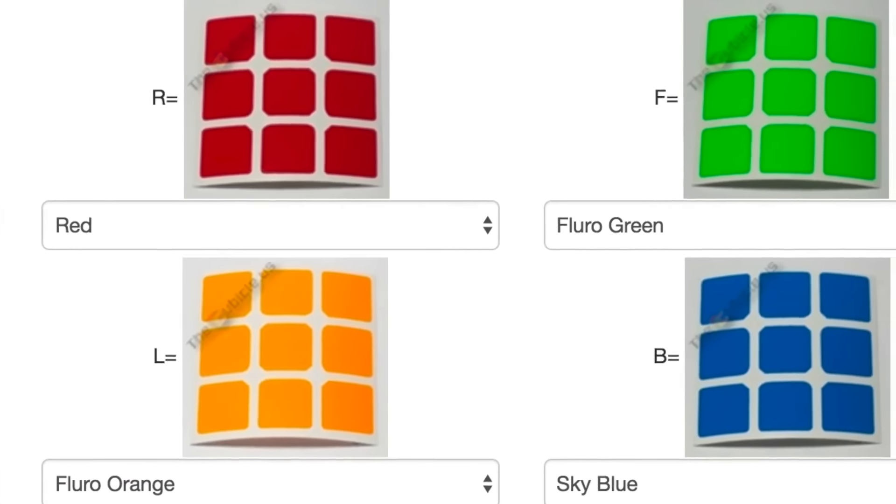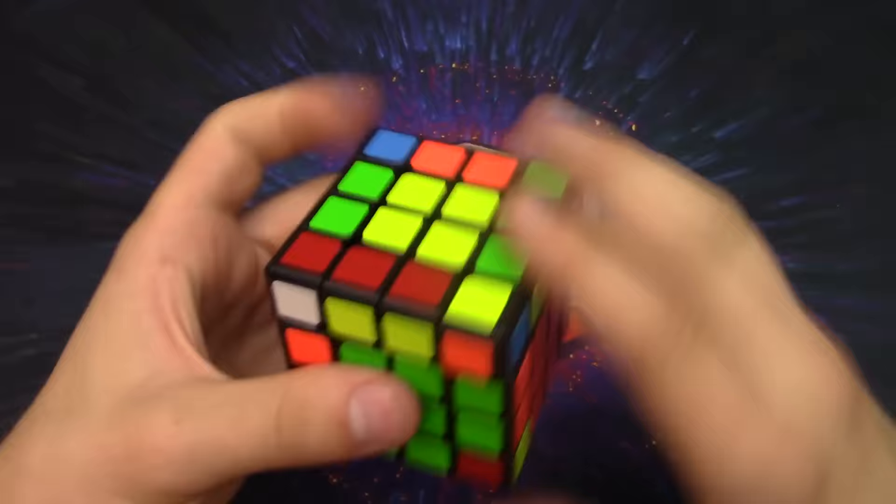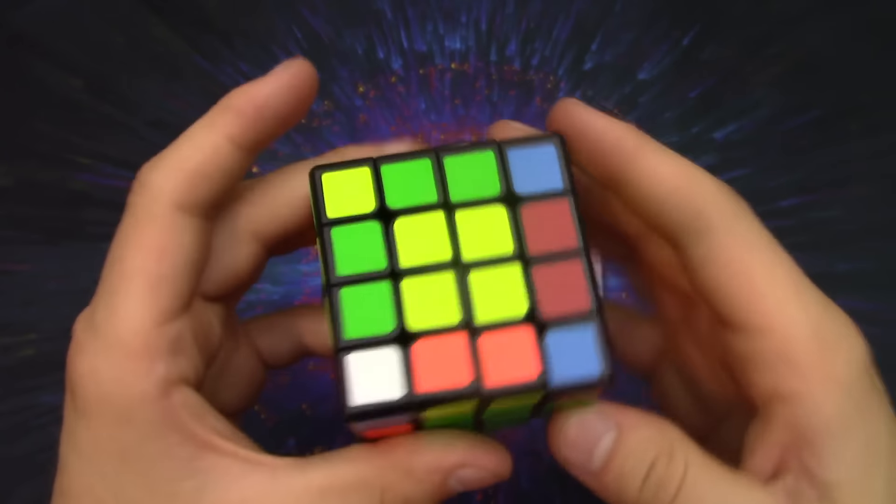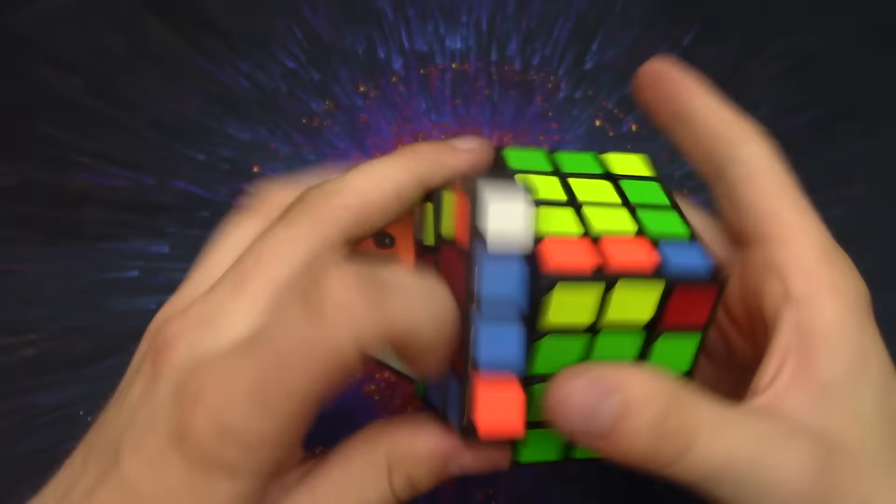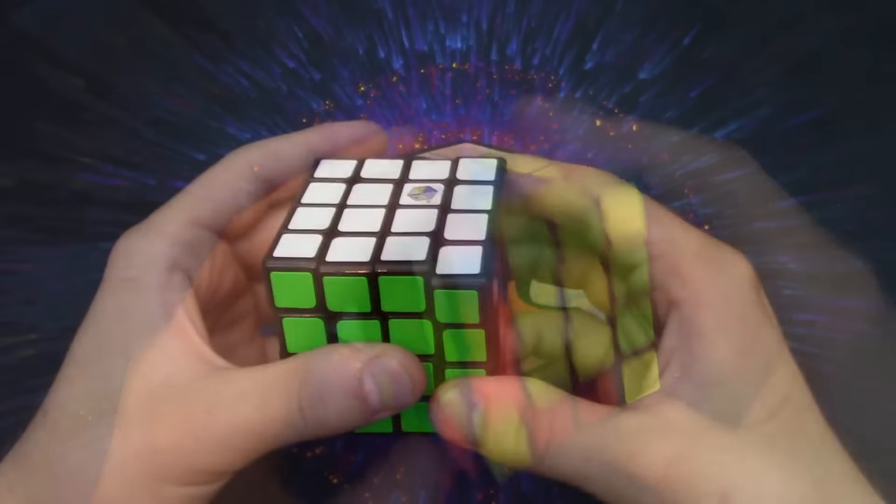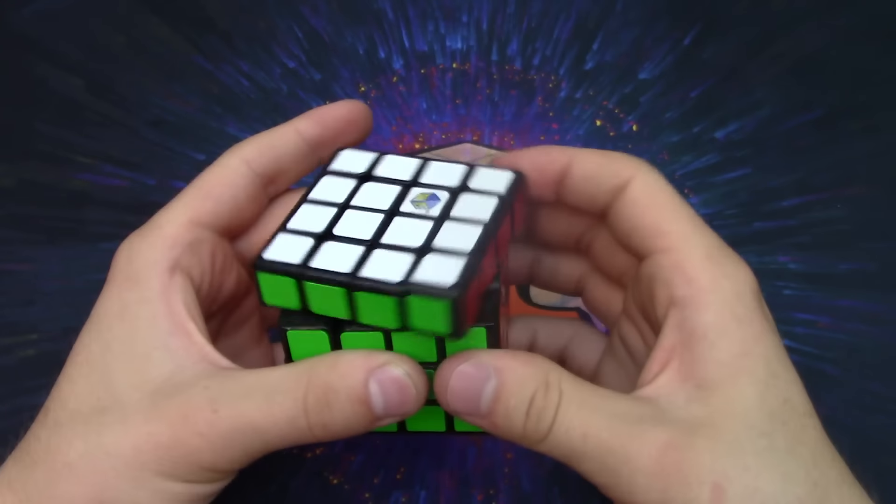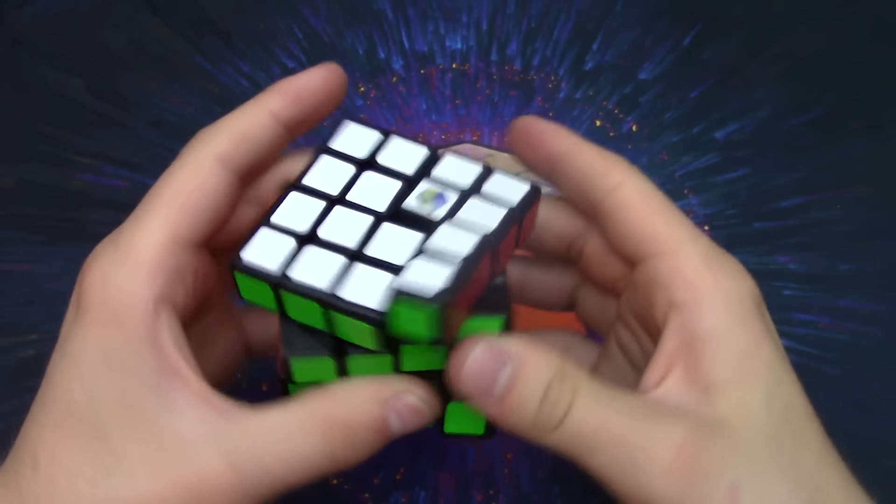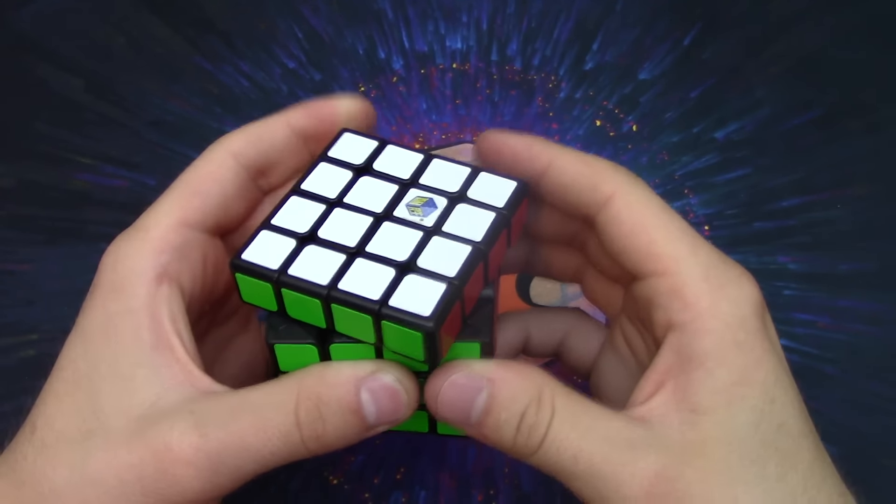During the 3x3 stage of the solve, the cube performs really well but it can be a little bit fast. But again, this can also be fixed with a little bit of lube. It performs well because of its ability to corner cut. This corner cutting is actually as good as the Moyu Aosu, meaning you can cut from line to line.